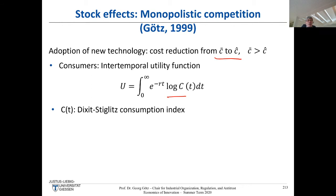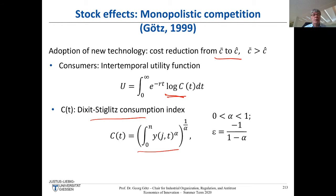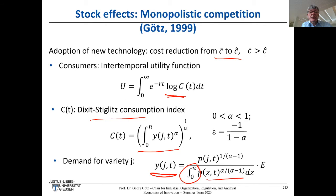We use an intertemporal utility function with a consumption index C, where the log guarantees constant expenditure each period. I introduced earlier the Dixit-Stiglitz consumption index — an index for differentiated products — which gives a wonderful, easy demand function for each variety, despite having a complex-looking integral in the denominator capturing rival prices.